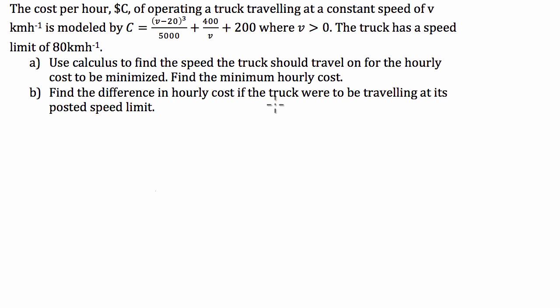So we have to find the difference in hourly cost between the minimum cost and the cost that it would incur for driving at 80 kilometers an hour. So let's get straight to it. If we're going to do an optimization question or a question where we have to minimize anything, cost, time, whatever, we have to first find the first derivative of this function. So let's go about doing that. So here we have C in terms of V. So what we're going to do is we're going to have C dash in terms of V.